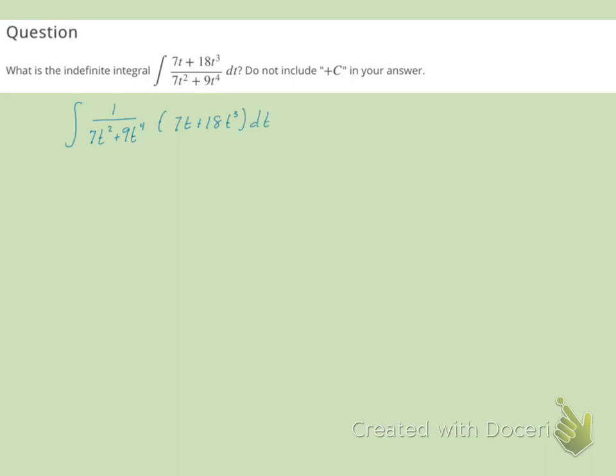Notice I just undid the multiplication that got me that original fraction. So I'm going to let u equal 7t squared plus 9t to the 4th,